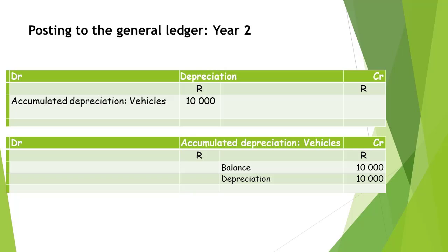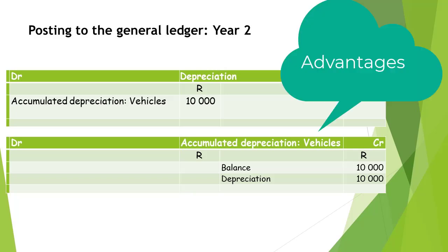You will note that the depreciation calculated in year 1 and the depreciation calculated in year 2 for this vehicle is exactly the same, namely 10,000 Rand. If you think back to when we discussed the advantages of the straight line method, it was mentioned that the depreciation from month to month or year to year will stay exactly the same.